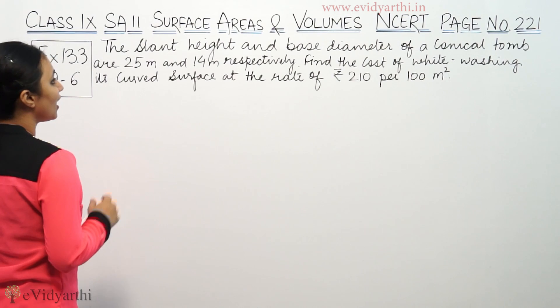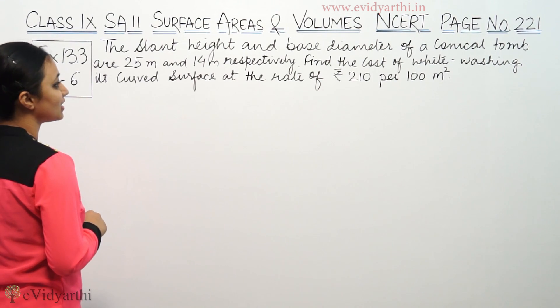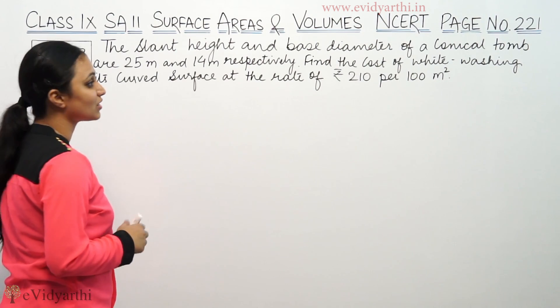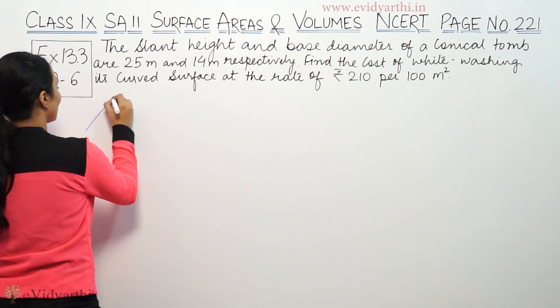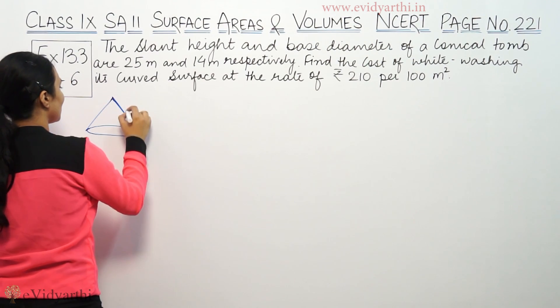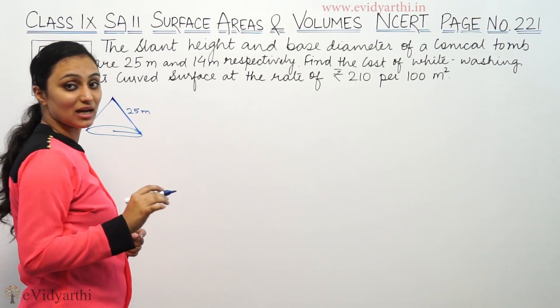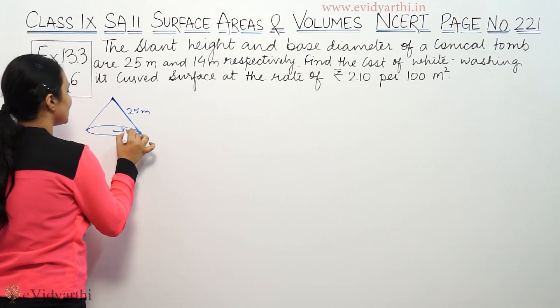What is given here? Slant height and base diameter is 14 meters. When we have a conical tent, slant height means this thing - this is 25 meters. Base diameter is 14, that means the radius is 7 meters.